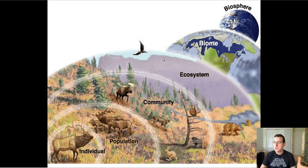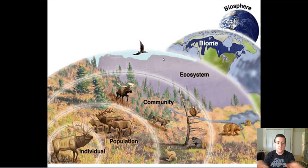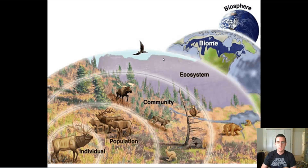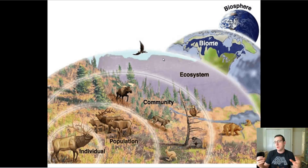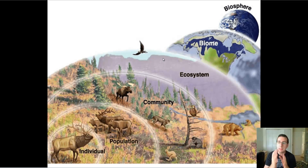A population of humans includes only the human species. But if you look at several populations that exist within a certain area — for example, some of the carnivores and some of the herbivores that exist in an ecosystem — then you're talking about a community. A community involves relationships between populations of organisms, between more than one type of organism.